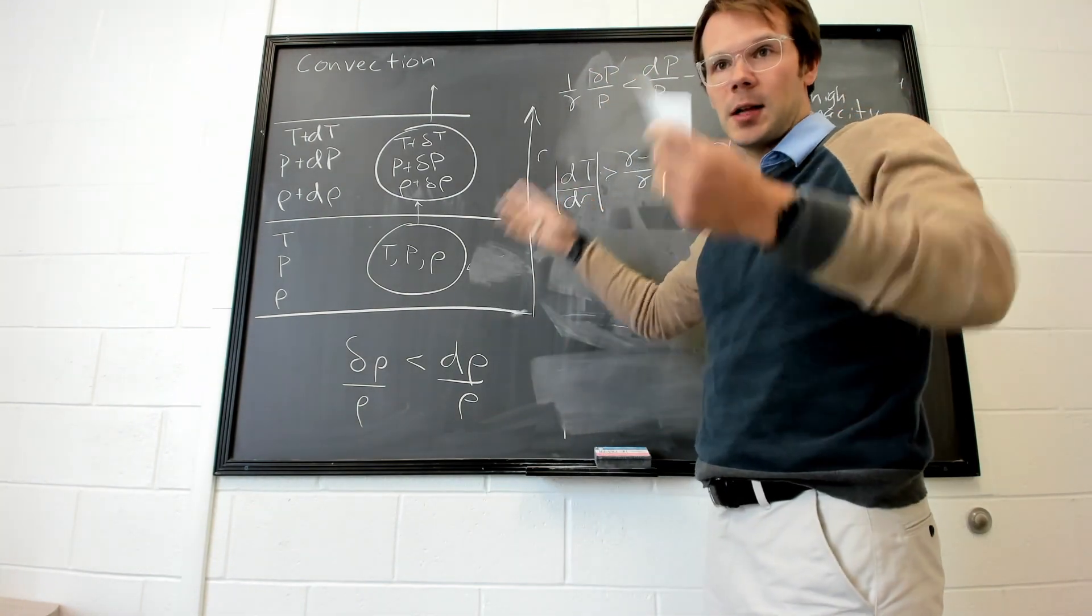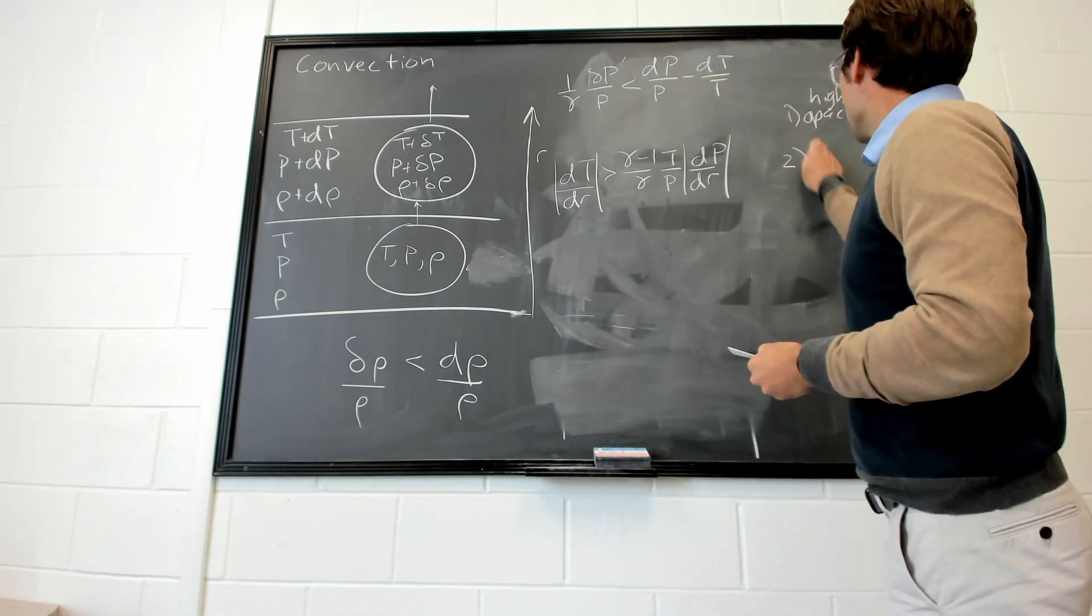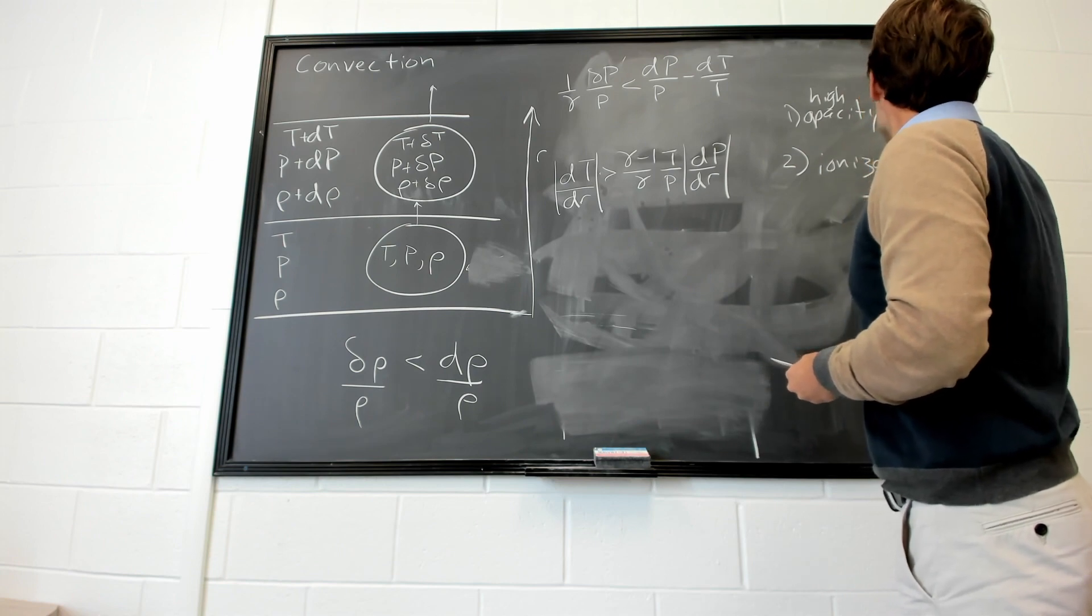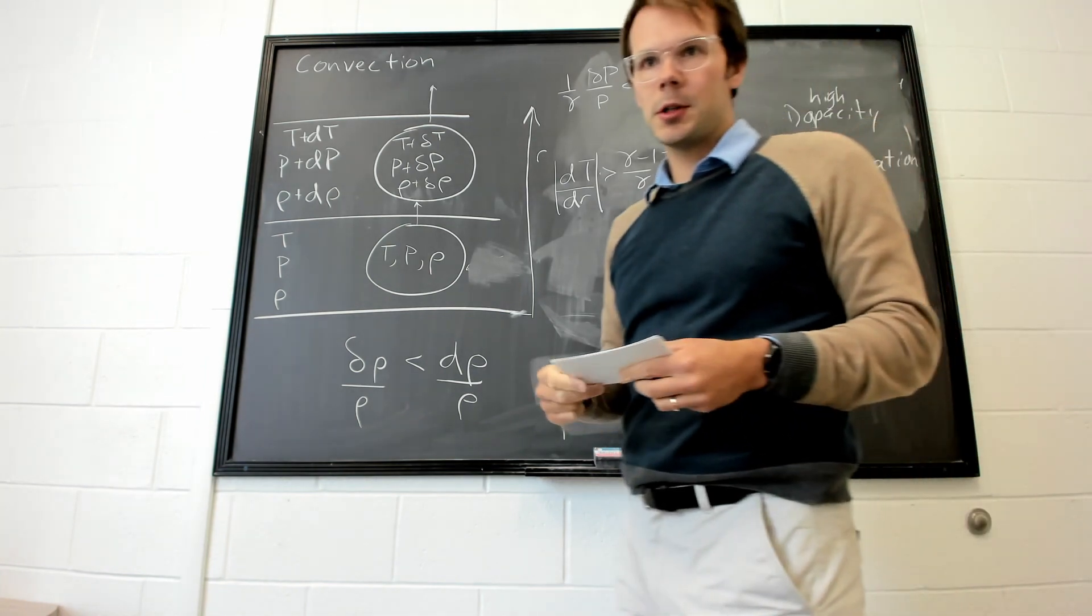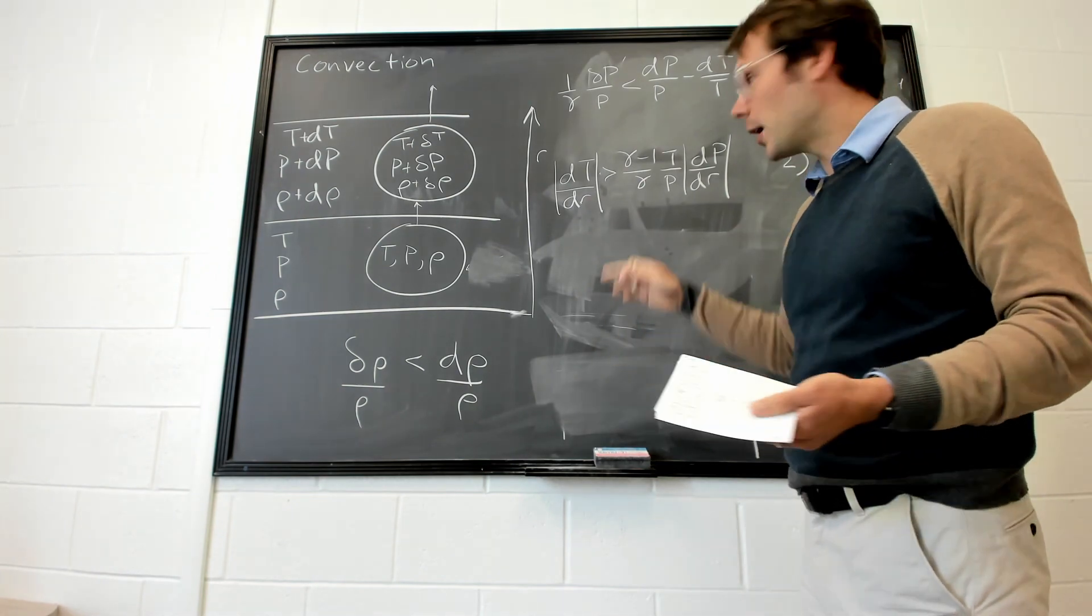And so frequently, it just gets too much to ask of the stellar atmosphere and convection will take over. Another place where convection can occur in stars is when ionization is important.